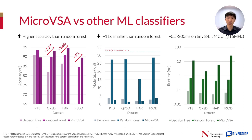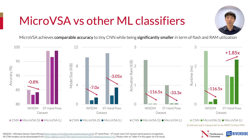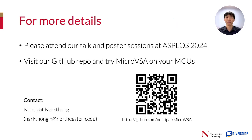MicroVSA achieves higher accuracy than many traditional classifiers while being significantly smaller. Compared to TinyCNN, MicroVSA achieves comparable accuracy while using less flash and RAM.